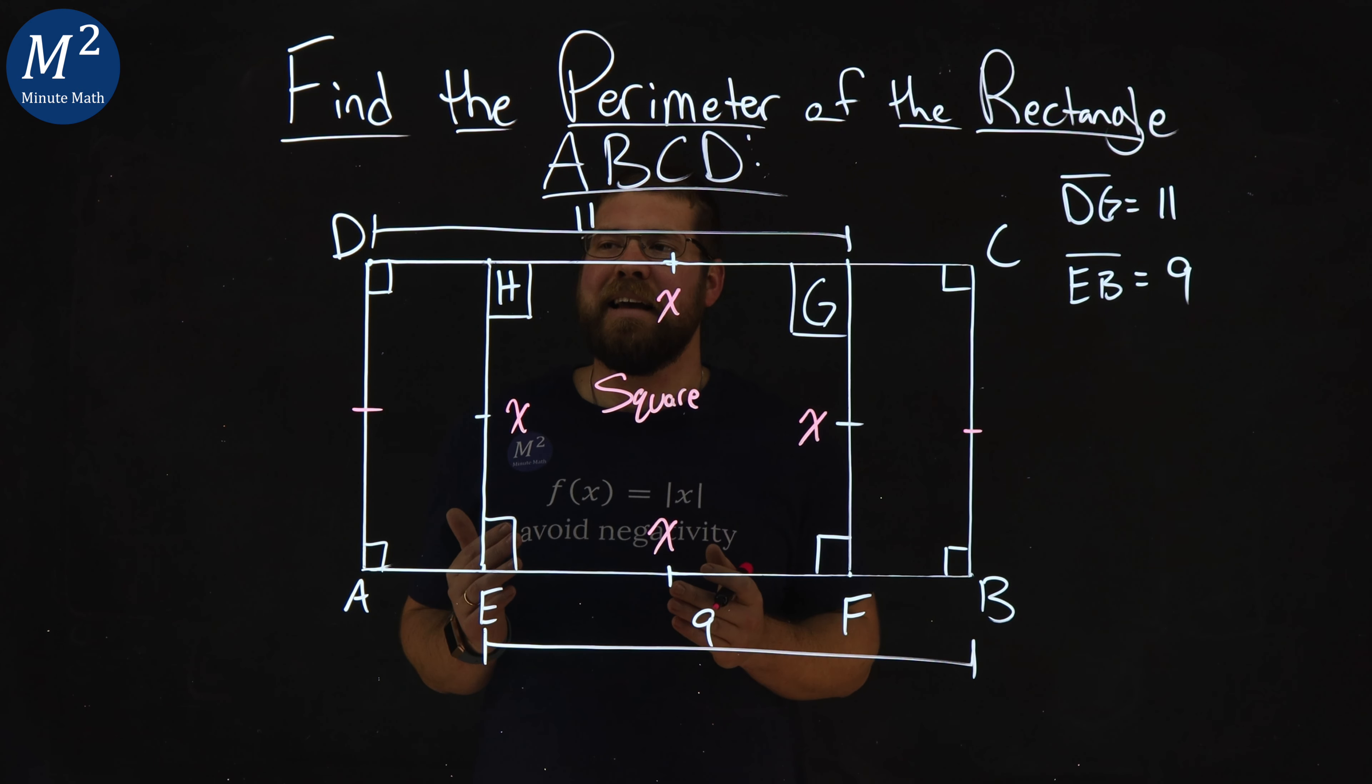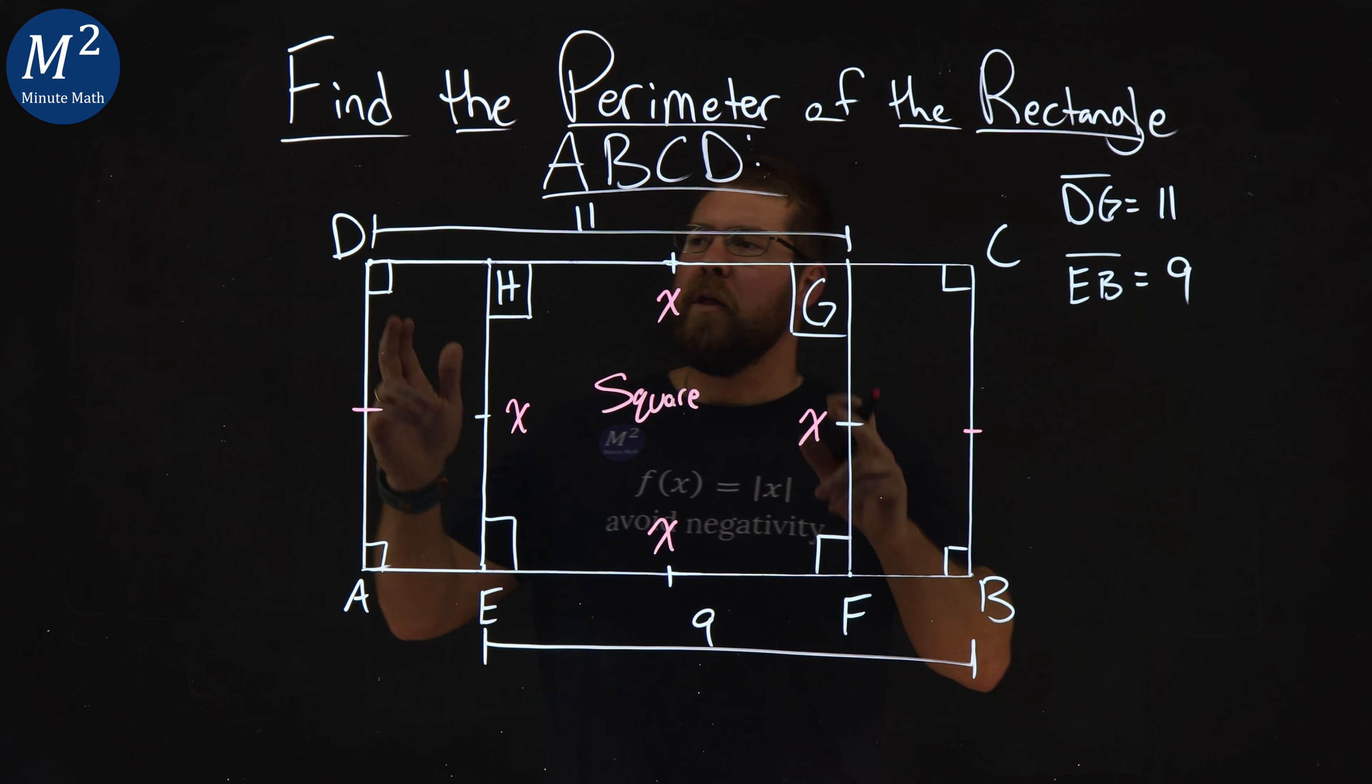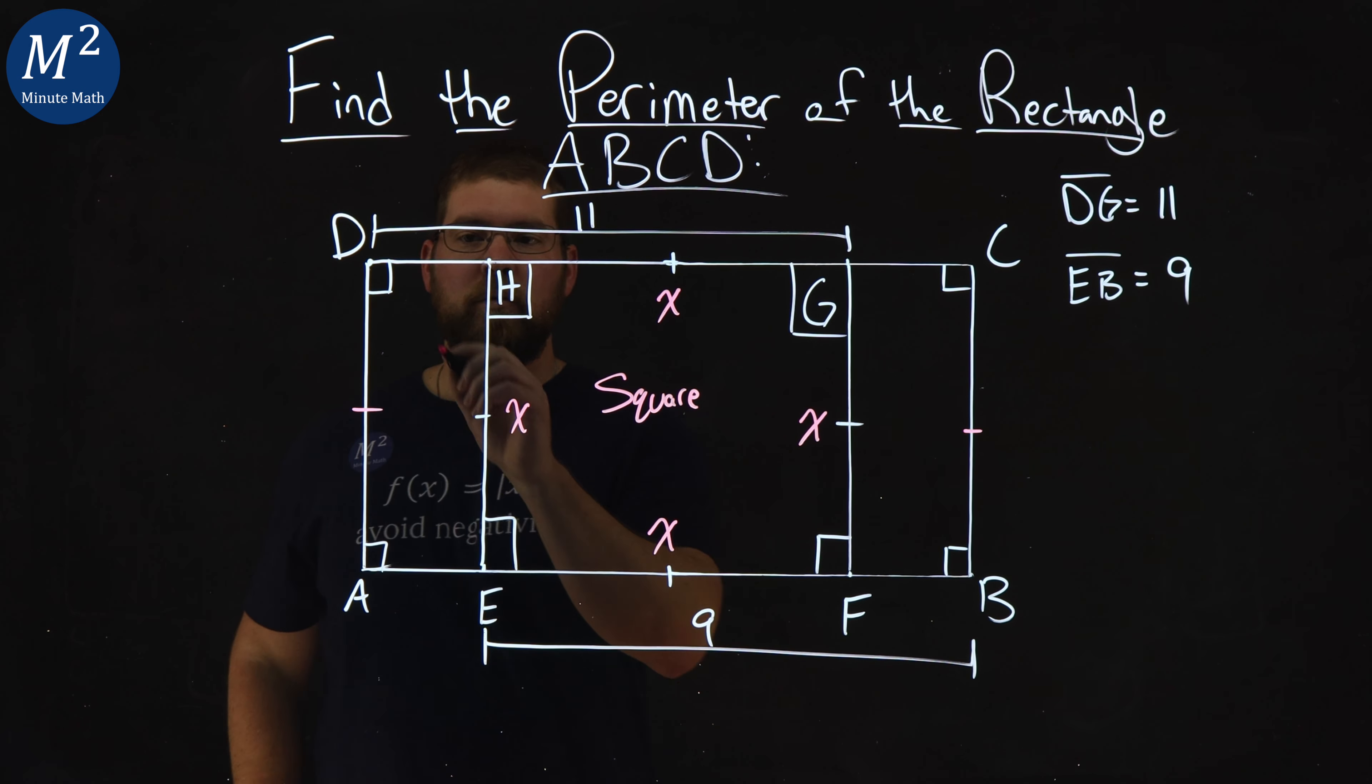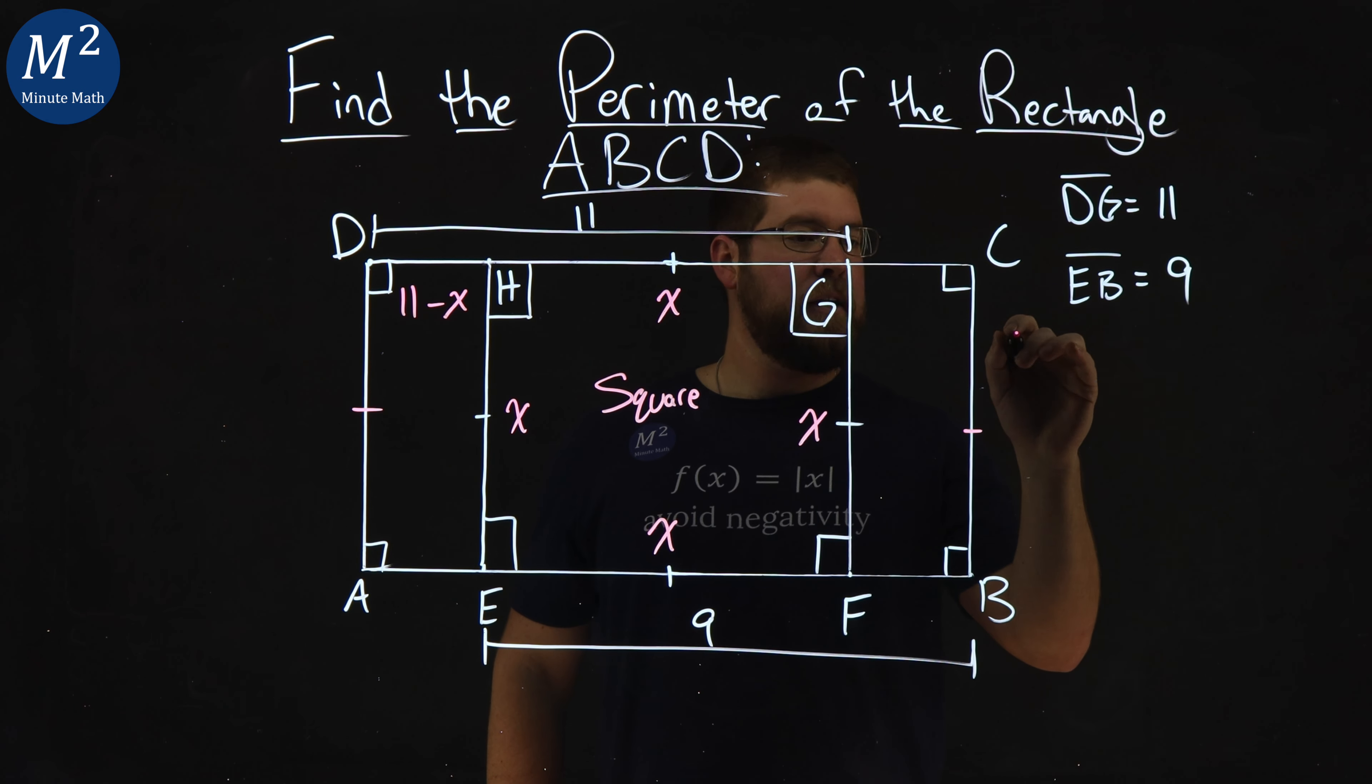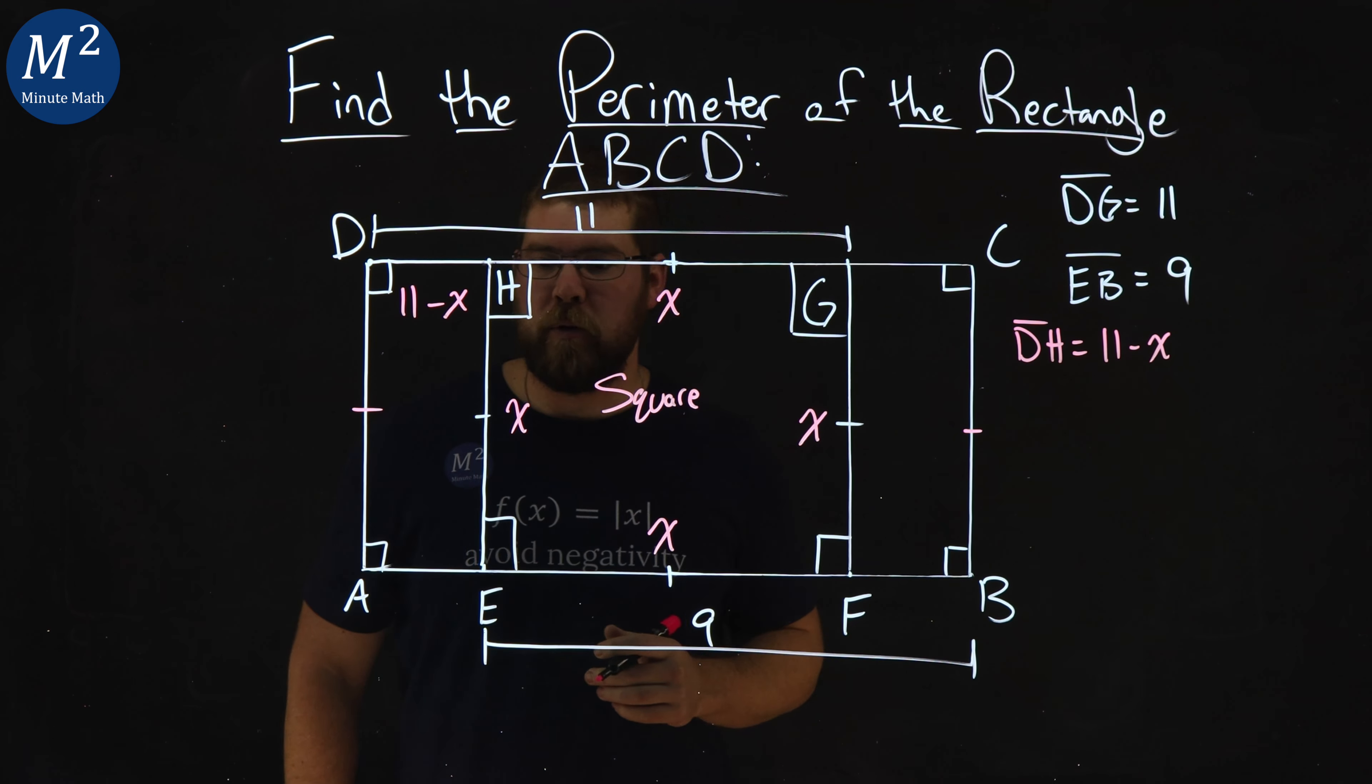Now, I want to tie in our length of DG. Well, if DG has a length of 11, and HG has a length of X, DH would be that total length 11 minus whatever the length of X is. So we can write here that DH, that length, is equal to 11 minus X.